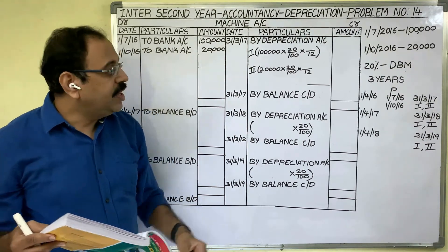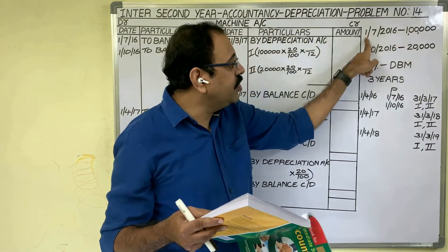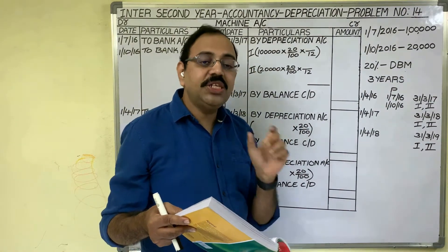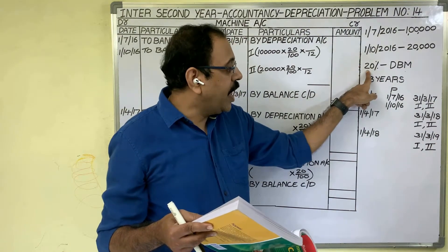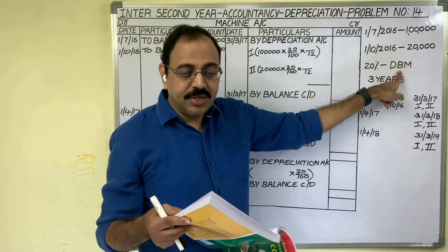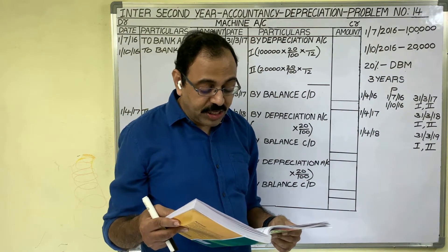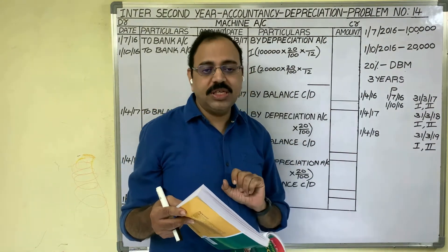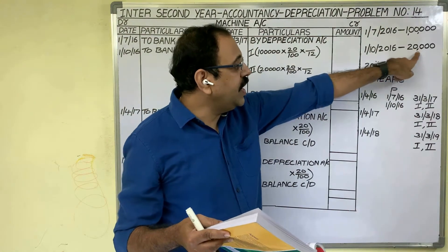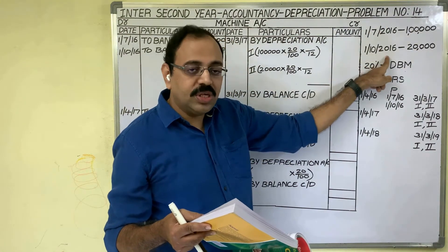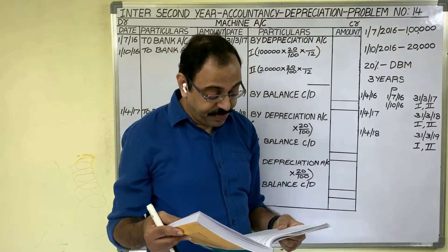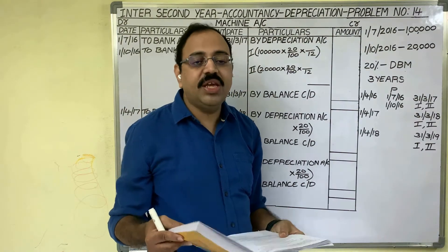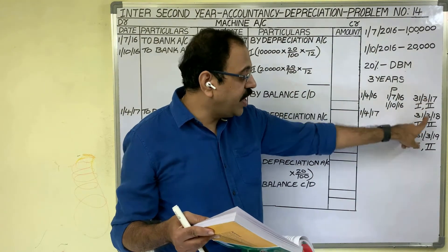Let us see the question first. The National Company purchased a machine on 1st July 2016 for 1 lakh rupees. Depreciation is provided at 20 percent under the diminishing balance method. On 1st October 2016, another machine was bought for 20,000 rupees. So in this problem, there is an additional purchase — two assets in total.